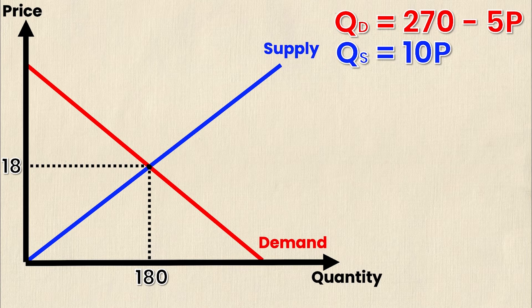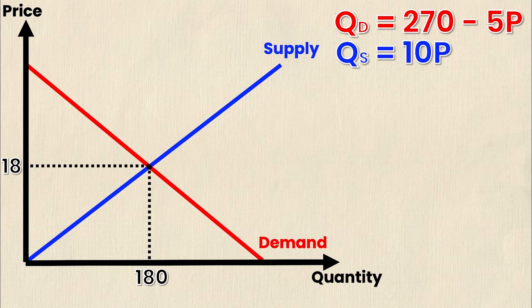Well anywhere along the price axis we know that the quantity is zero. That is for a y intercept the x value must be zero. So all I need to do for each equation is set quantity equal to zero and solve for P and that's going to give me my P intercept or my y intercept in this case. Let's start with the demand equation which will yield us the price intercept for the demand curve.